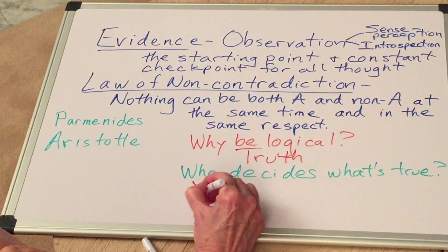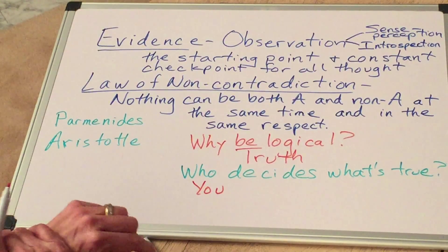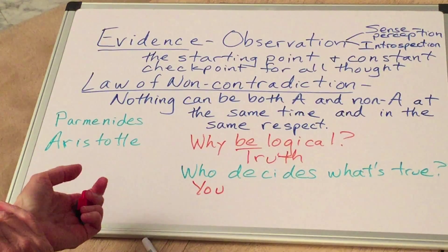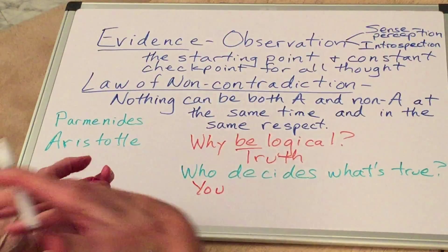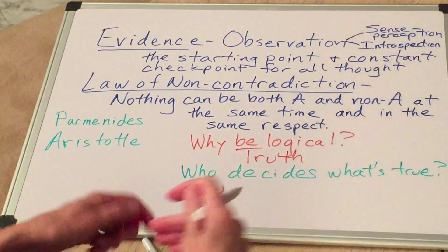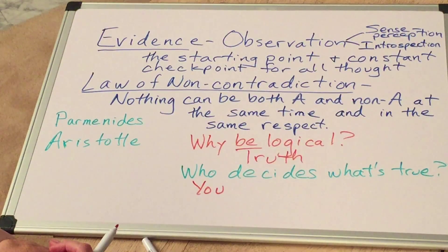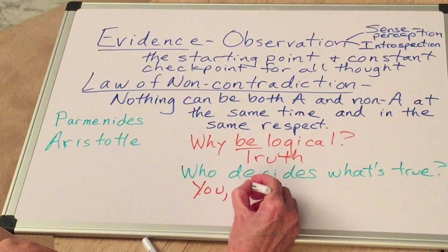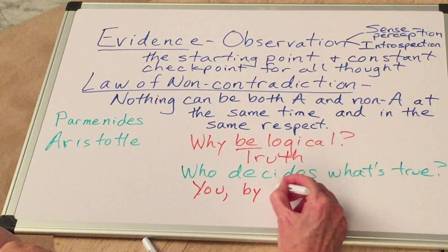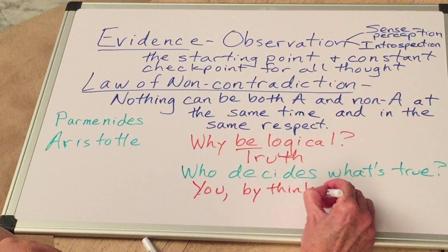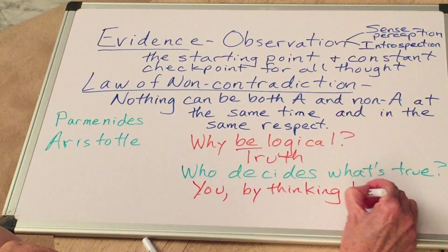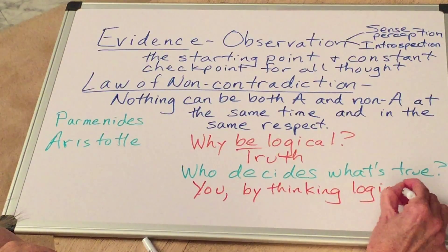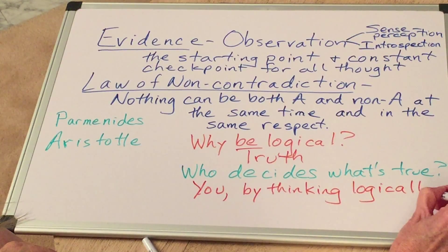Each of us decides what's true, but not just arbitrarily, not just by whatever idea we happen to believe or whatever idea we want to be true, but each of us decides what's true by thinking logically. So, we each, by following these principles, figure out for ourselves how the world actually is.